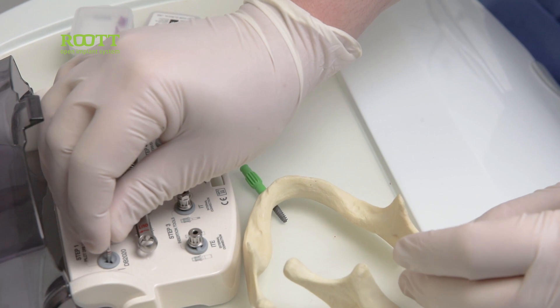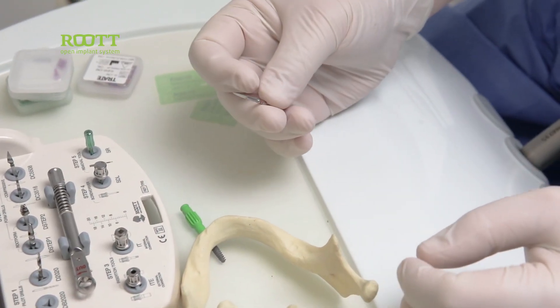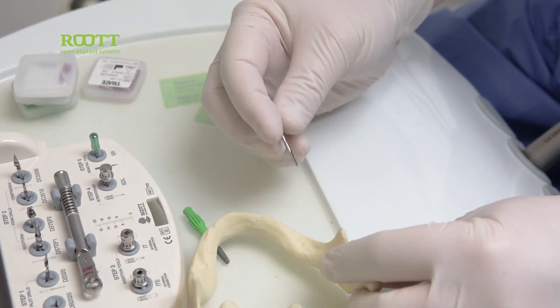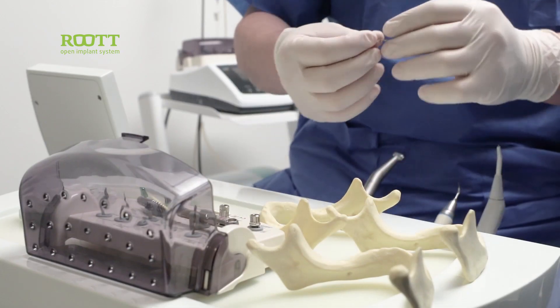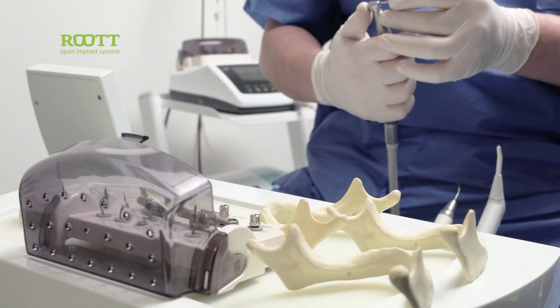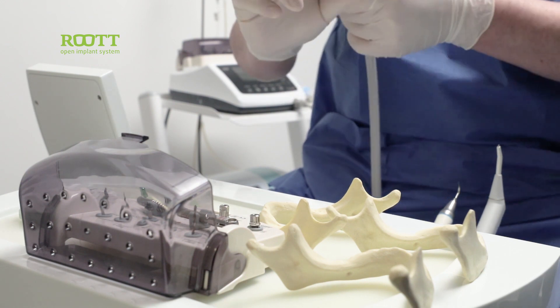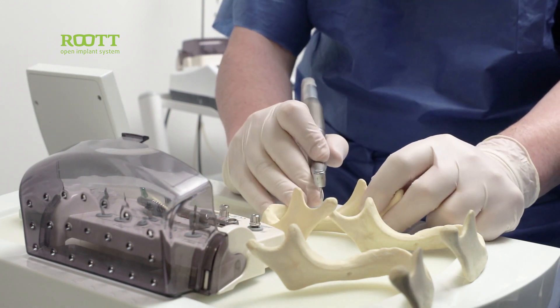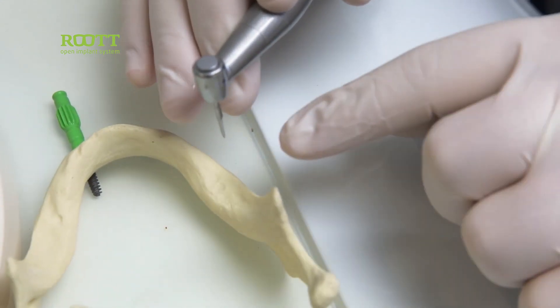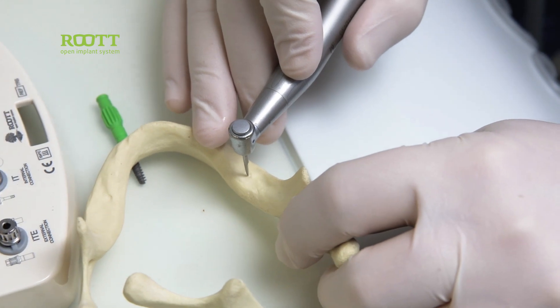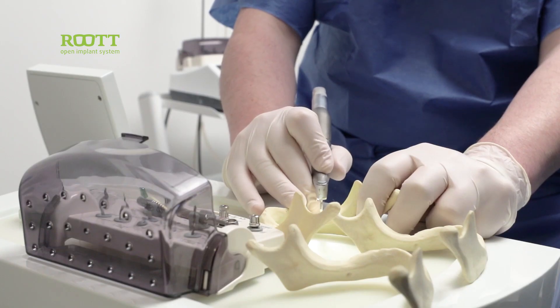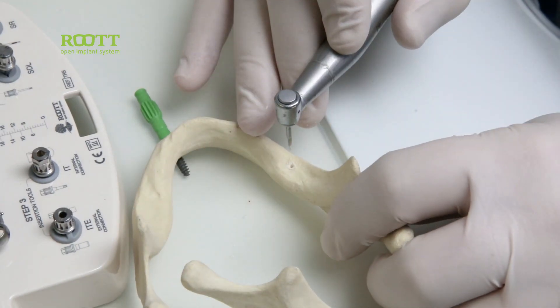First of all, we start with the pointer. The pointer will point only where we are going to place our implant. With the pointer, what we need is only to perforate the cortical. We don't need to go all the length, only perforating the cortical. That's enough.